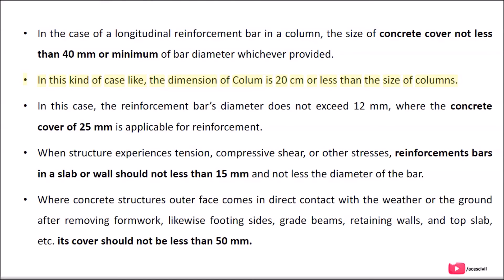In cases where the column dimension is 20 cm or less, and the reinforcement bar's diameter does not exceed 12 mm, a concrete cover of 25 mm is applicable. When a structure experiences tension, compressive shear, or other stresses, reinforcement bars in a slab or wall should not be less than 15 mm and not less than the diameter of the bar.